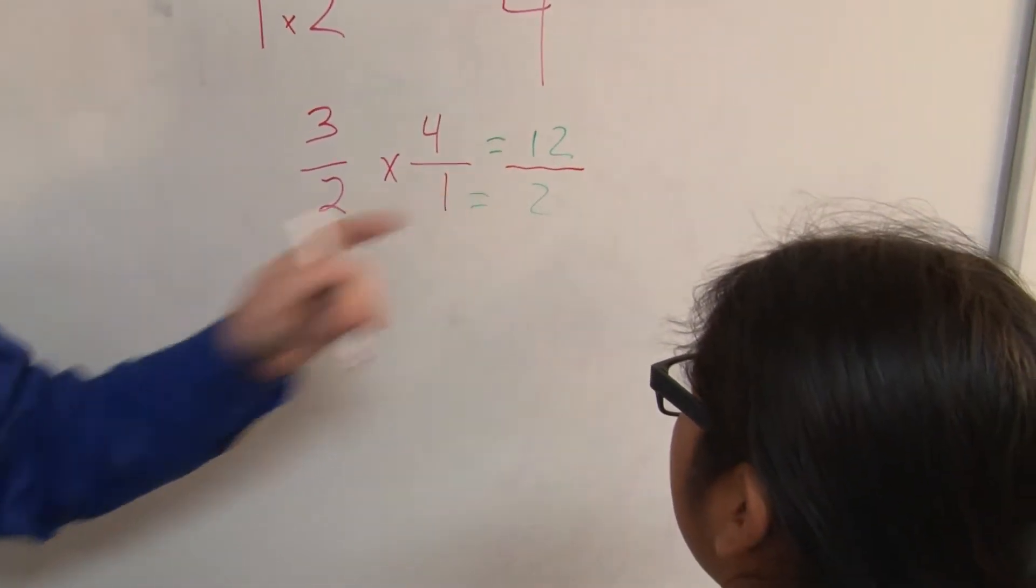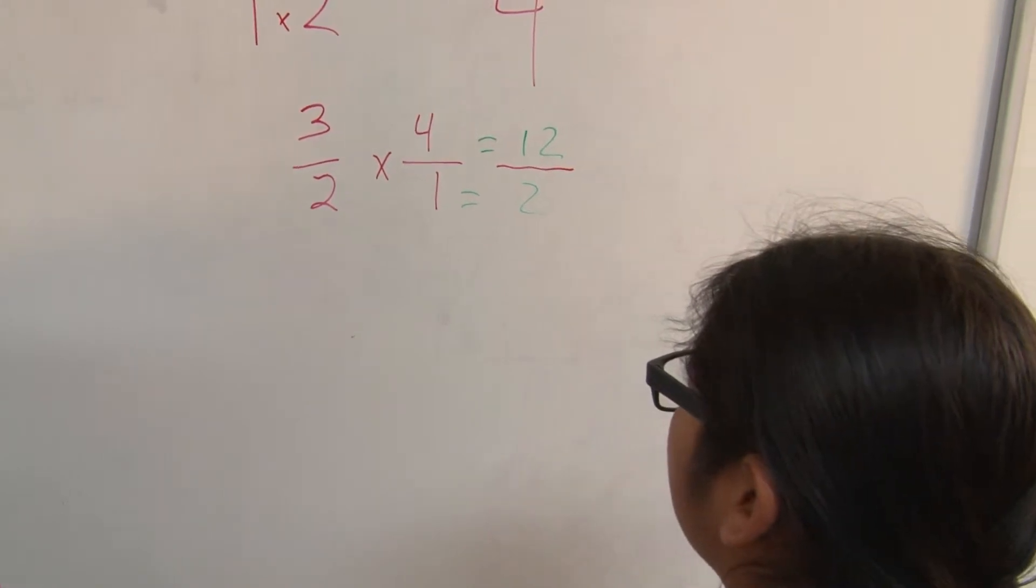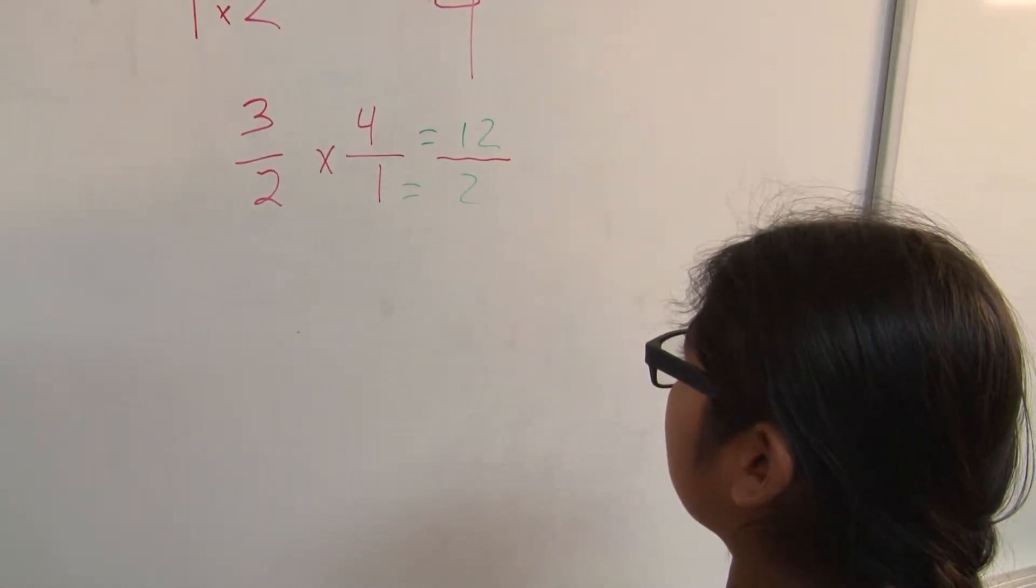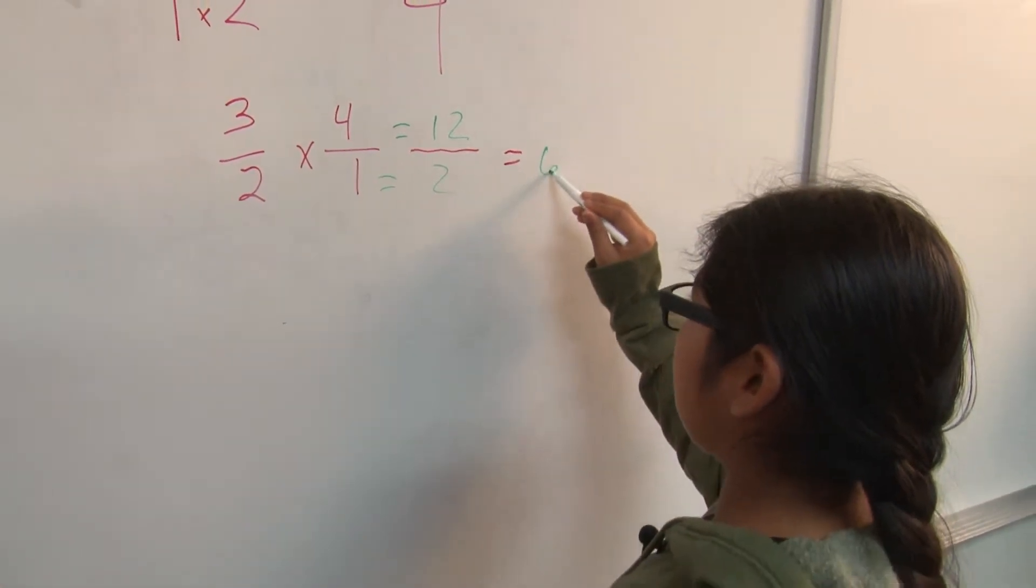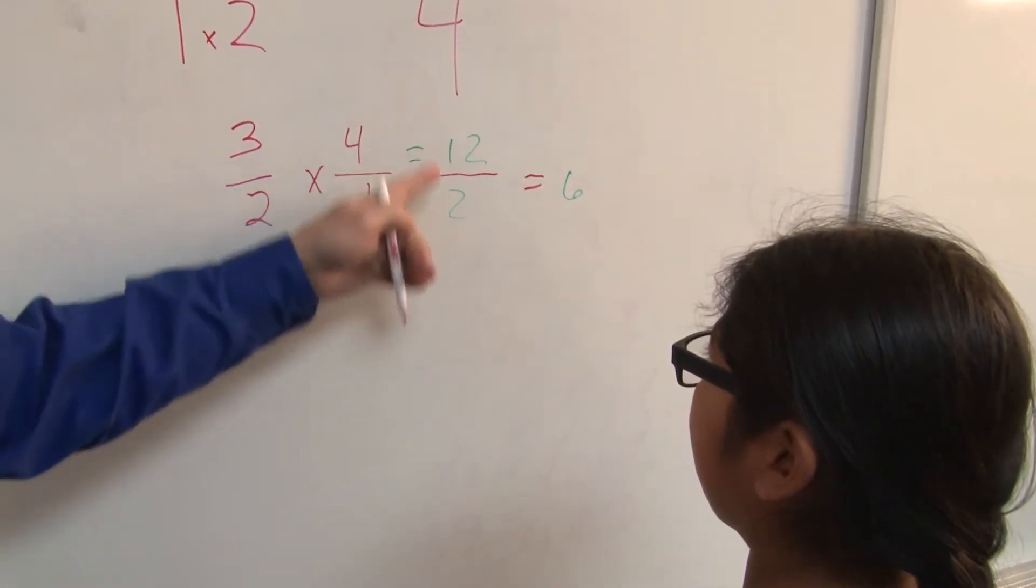So now what is 12 divided by 2? 6. Okay. So we can simplify that and that's going to equal 6. All right? Because 12 divided by 2 is 6.